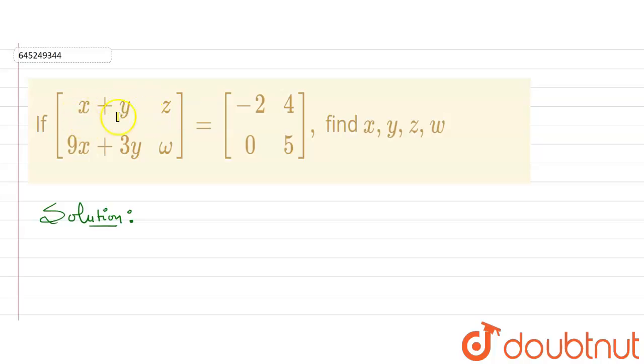...it is given that if this matrix [x+y, z; 9x+3y, w] equals the matrix [-2, 4; 0, 5], then we need to find the values of x, y, z, and w variables. So two matrices are equal.